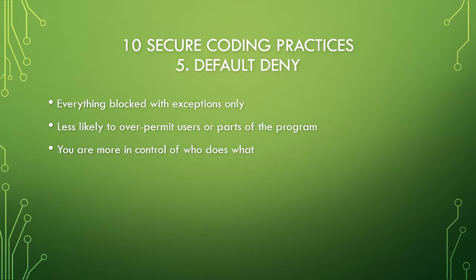Number five is default deny. Every single permission is blocked automatically by default. This allows you to give specific exceptions, meaning you are specifically allowing something through the deny of everything. That means you know exactly what you're allowing in and exactly who you're allowing in. You don't have to worry about users finding holes in your attempt to deny things.